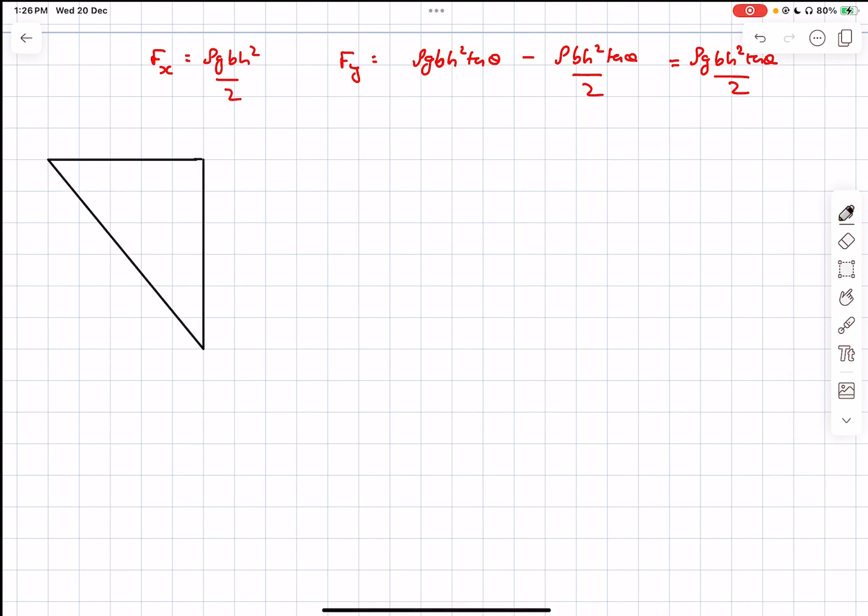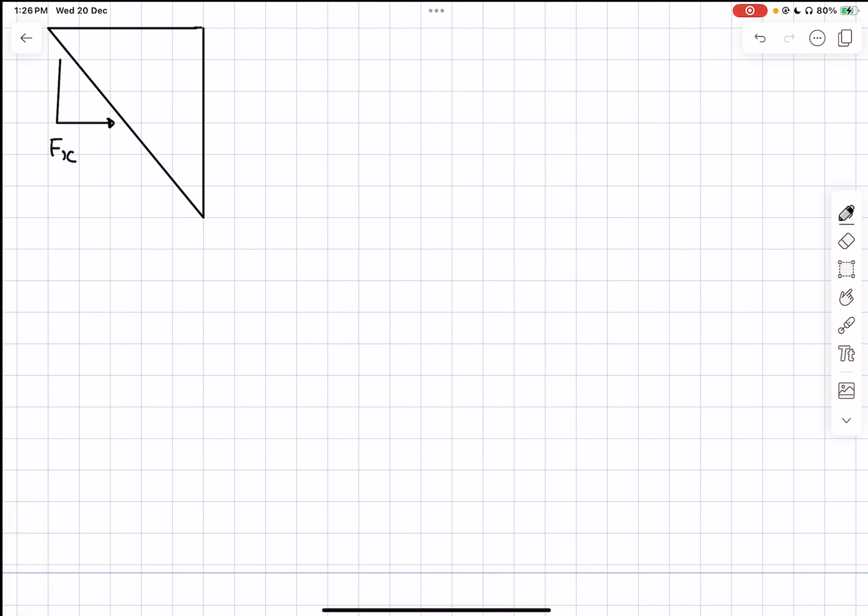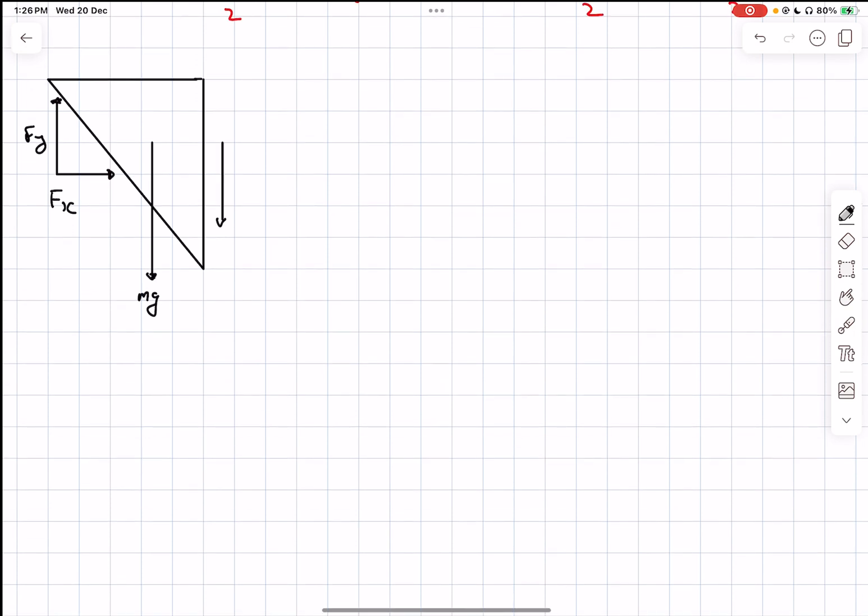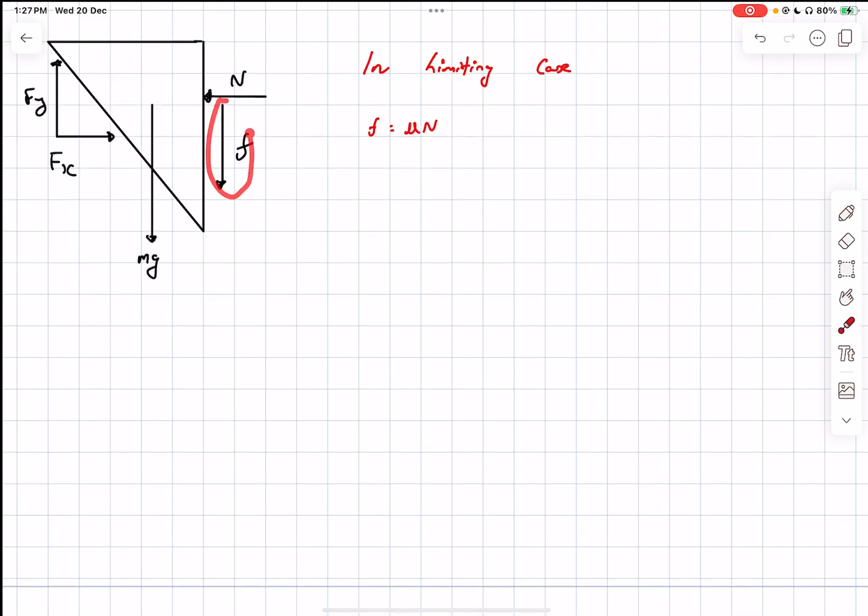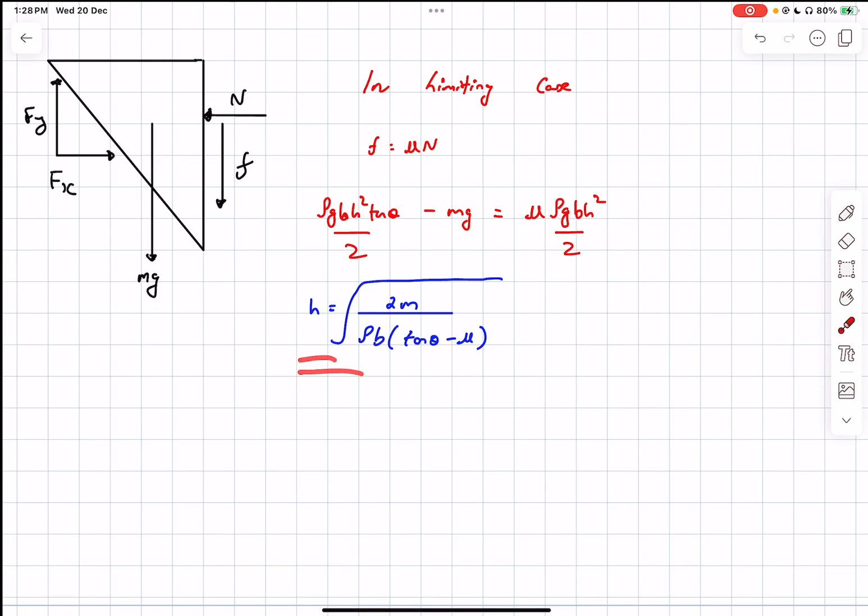So now what we're going to do is draw the FBD of our wooden plank. So now what are the forces on our wooden plank? Direction of FX on the fluid was towards the left, which means the direction on the plank by Newton's third law will be towards the right. And similarly, FY will be in the upward direction. So now we have the weight of the wooden plank, which is going to be MG. And again, as the tendency of this is to go up, the friction will be in the downward direction. And we also have the normal reaction from the wall. Let's call it N. And now in the limiting case, we know the friction force equals mu multiplied by the normal reaction. From the diagram, F is simply equal to FY minus MG. And FY itself, rho GBH squared tan theta by 2. And normal reaction is simply equal to FX. And after solving, we'll get the value of H as this particular value.